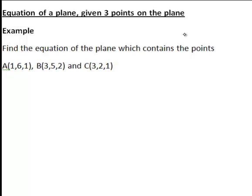The first step is to find two vectors that lie on the plane. We can do this by finding two vectors using pairs of these points. So for instance I might decide to do this by finding the vector from A to B and the vector from A to C.